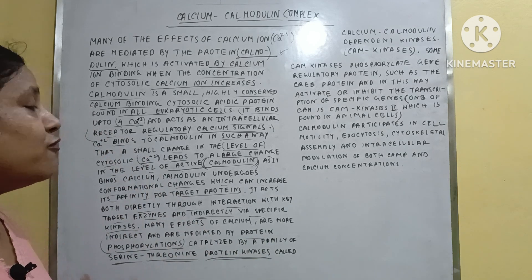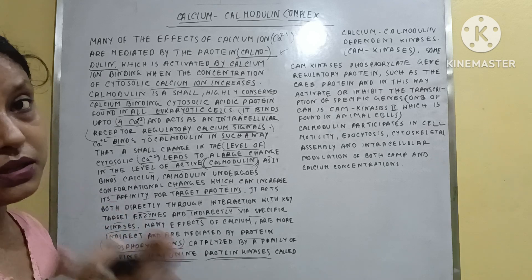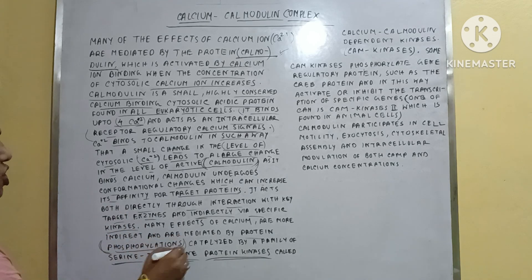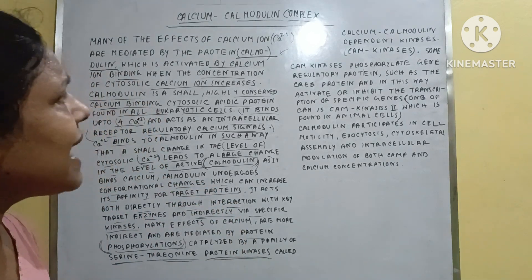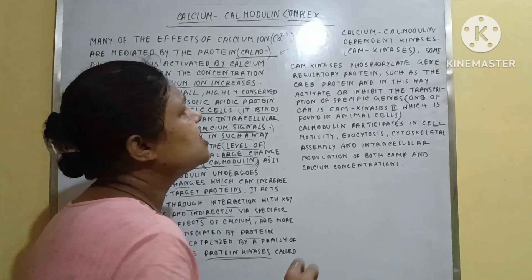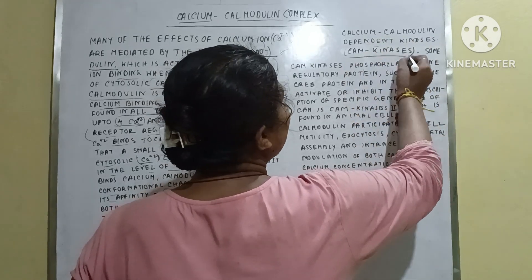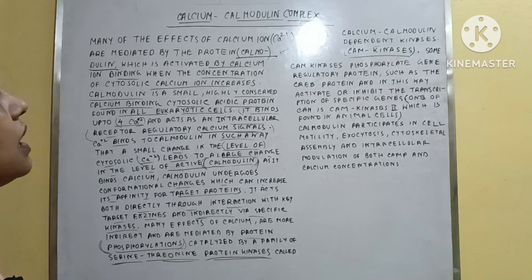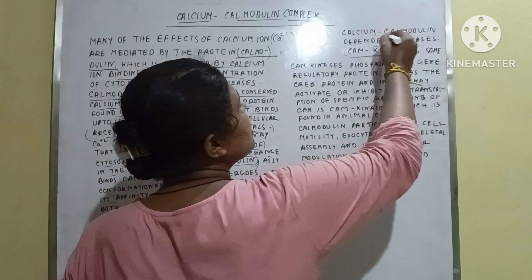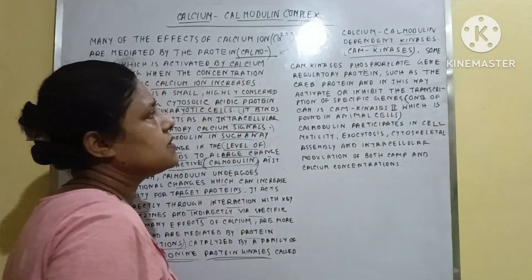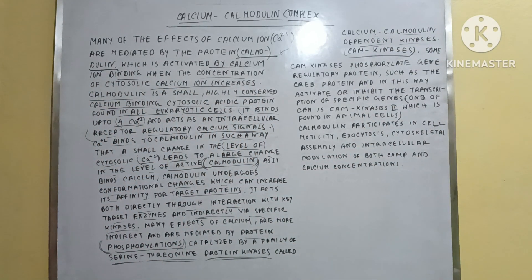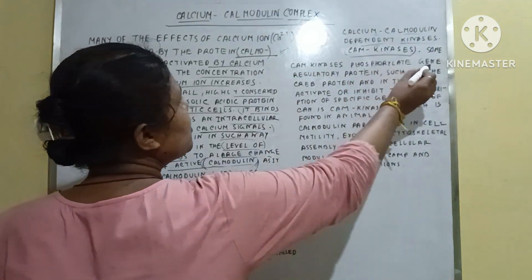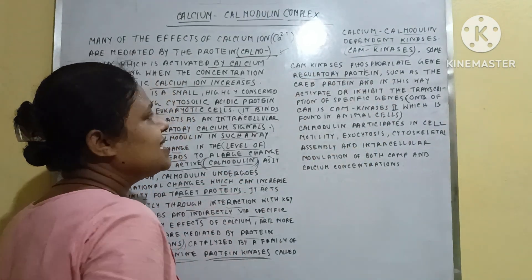The process involved for the binding of this complex is phosphorylation. The calcium-calmodulin dependent kinases are known as CAM kinases. This indirect process where kinases are involved is called the calcium-calmodulin dependent kinases, or CAM kinases.